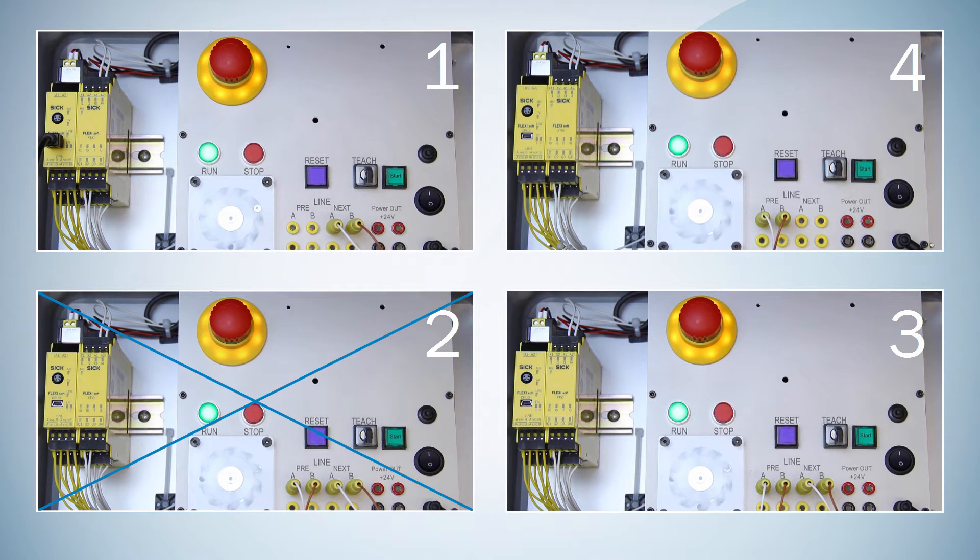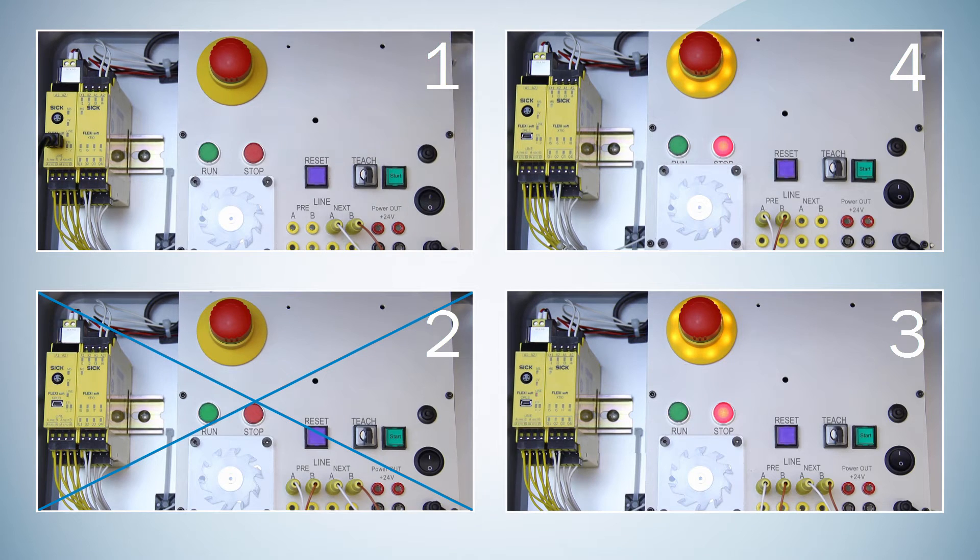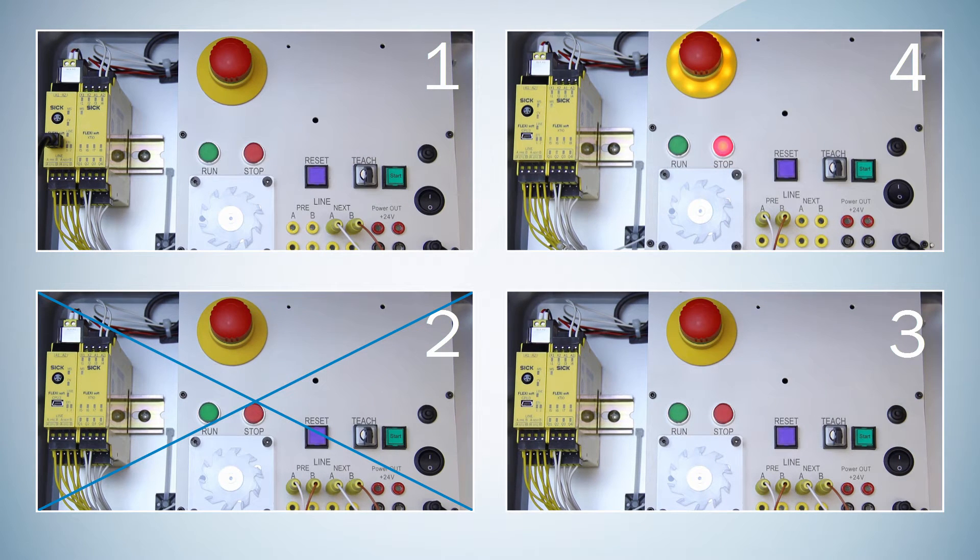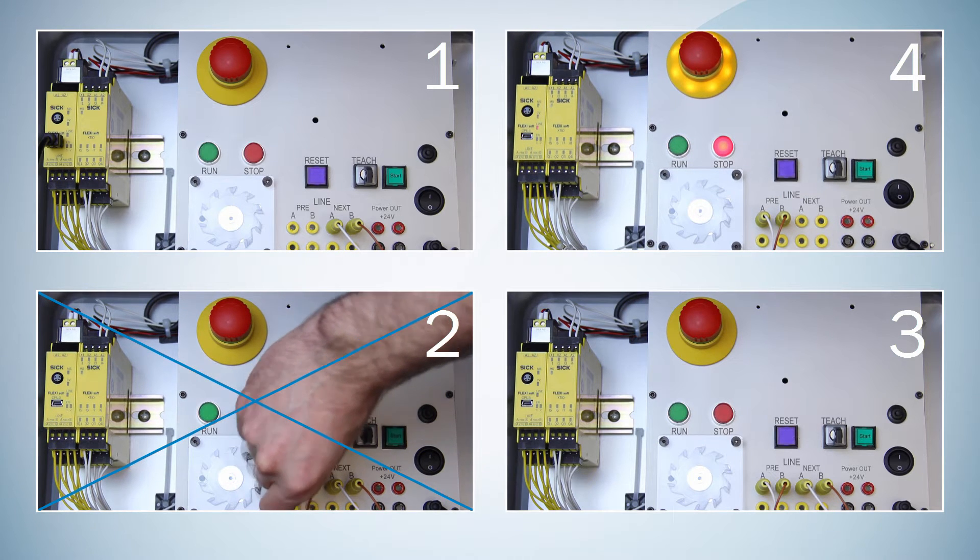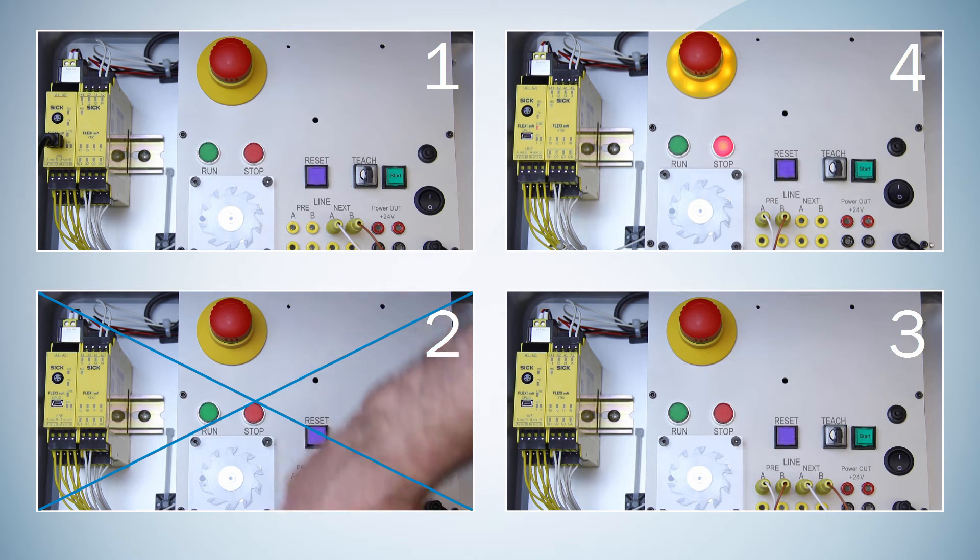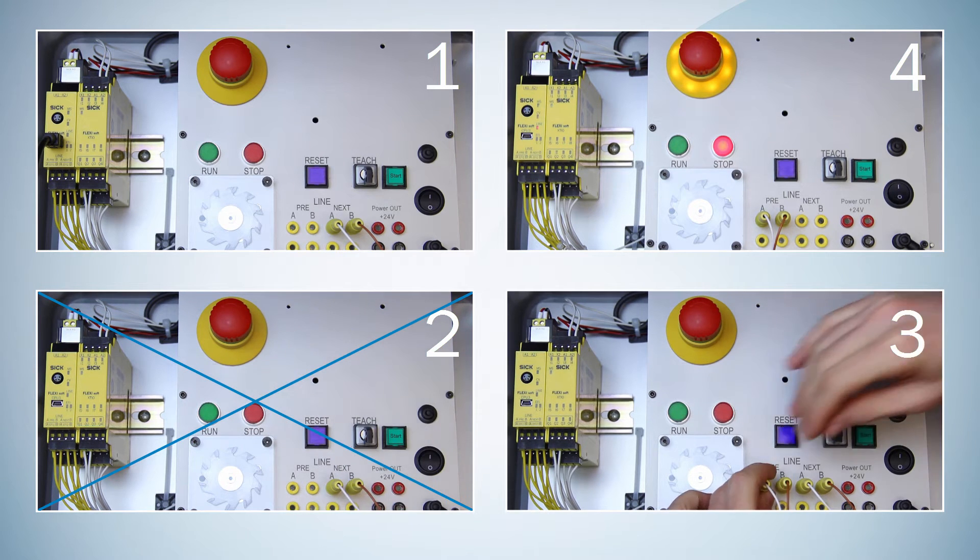At first we need to switch off the station itself and the neighboring stations number 1 and 3. Now I adapt the wiring. Disconnect the cables from the terminals pre of station 2 and put them into the pre terminals of station 3.